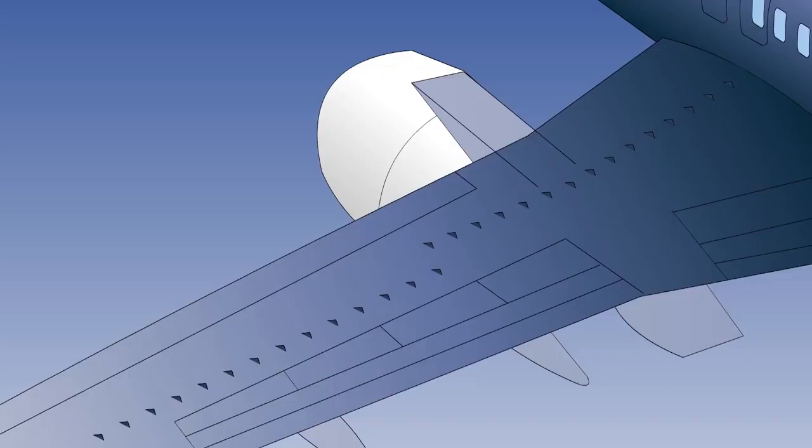For example, some aircraft have small vanes called vortex generators fitted on top of the wing ahead of the ailerons to ensure that the boundary layer remains attached longer than on the rest of the wing, to retain control effectiveness at speeds close to the stall.